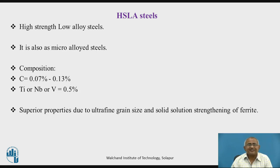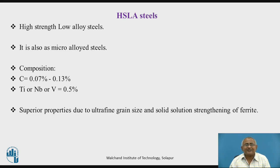What is HSLA steel? H stands for high, S stands for strength, L stands for low, A stands for alloy, and then steel. So it is high strength low alloy steel, and it is also called micro-alloyed steel. It is conventional mild steel or low carbon steel — a dead mild steel containing less than 0.15 percent carbon. This dead mild steel will have very good ductility, but its strength is low.